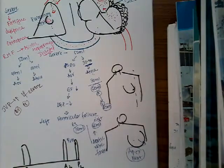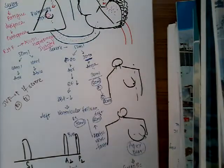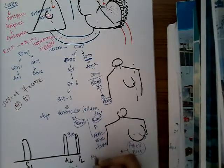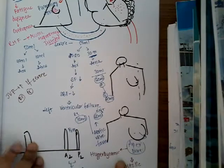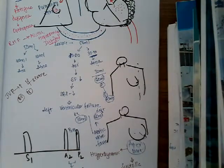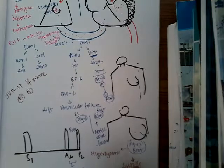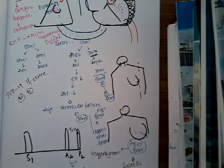Sometimes at the apex, on palpation you can also find a systolic thrill. This is because the apex beat is hyperdynamic due to the increased blood flow. This can lead to a systolic thrill. The systolic thrill can also be due to the S3 heart sound — the third heart sound which is felt — and this S3 can be felt as a systolic thrill.